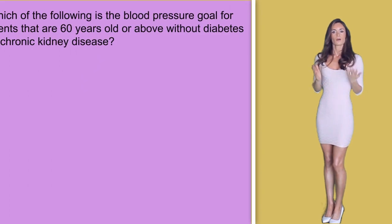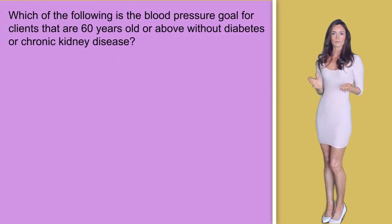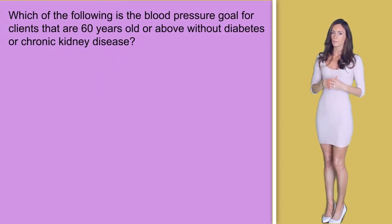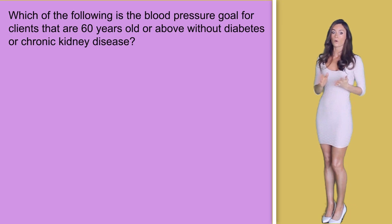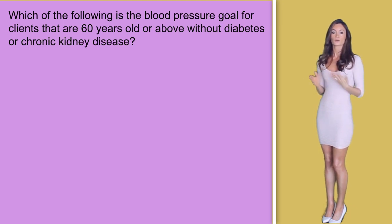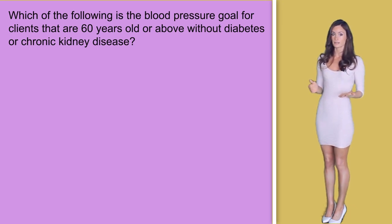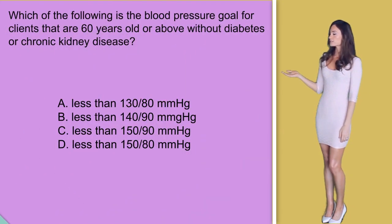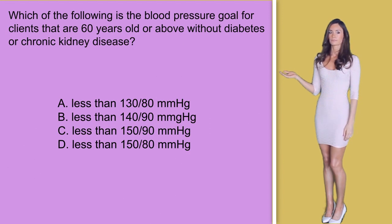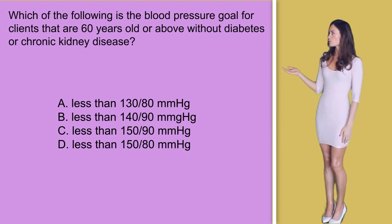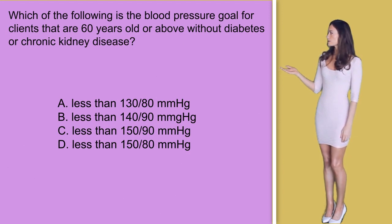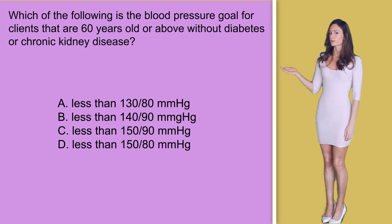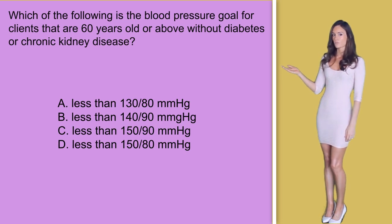Question number three: which of the following is the blood pressure goal for clients that are 60 years old or above without diabetes or chronic kidney disease? A) less than 130 over 80, B) less than 140 over 90, C) less than 150 over 90, or D) less than 150 over 80.